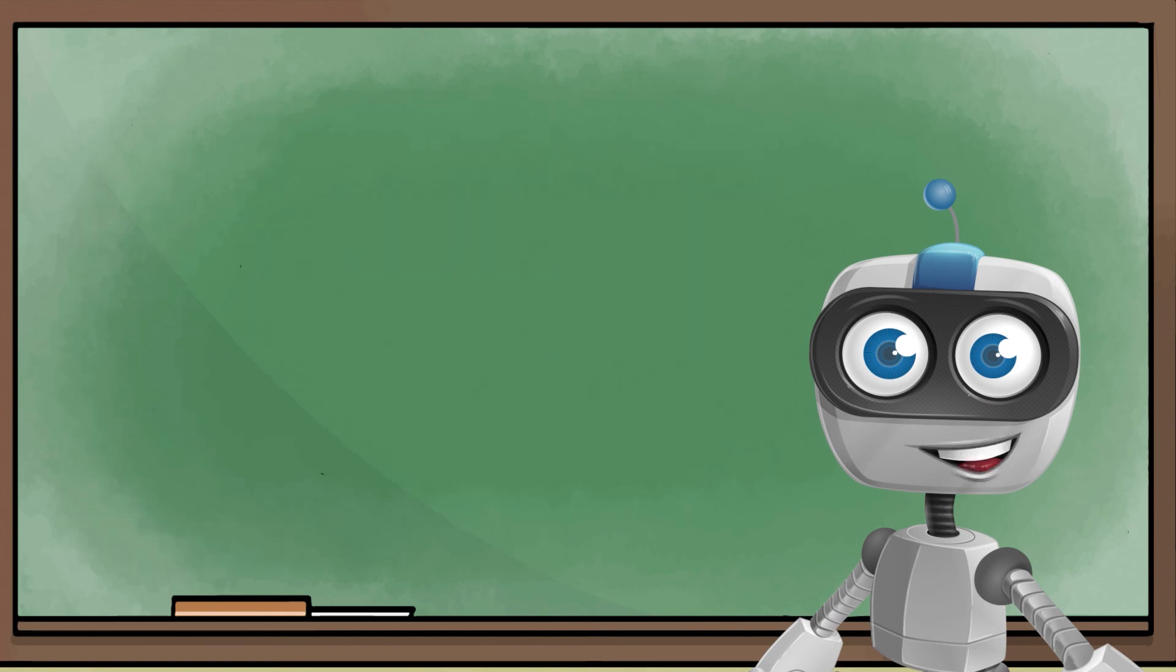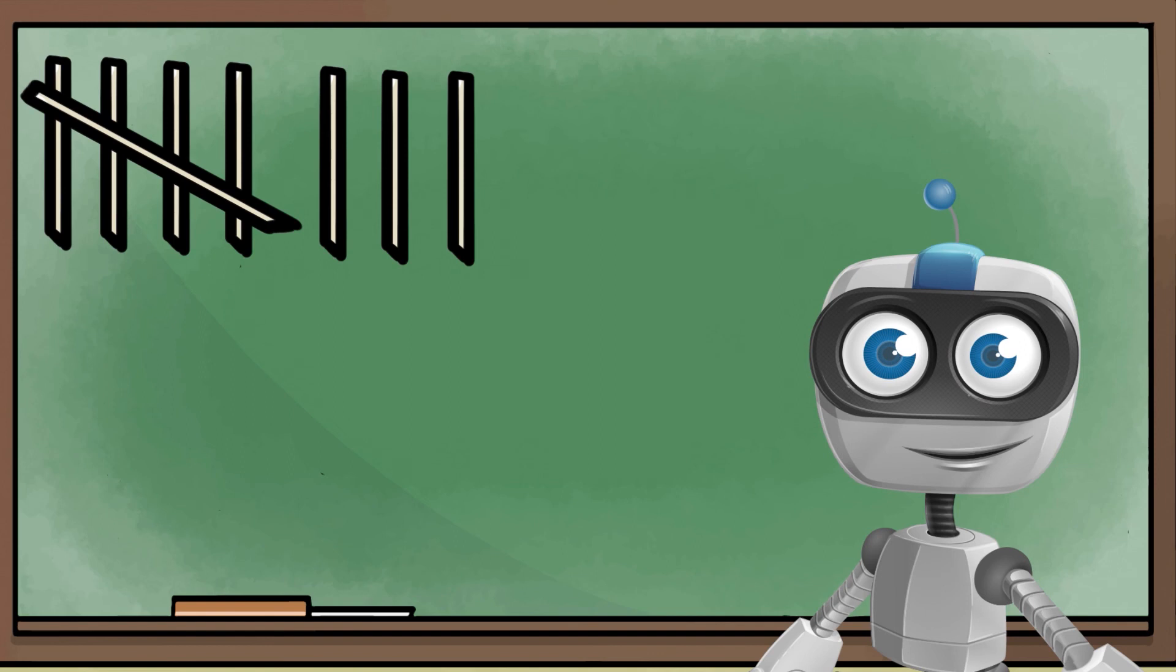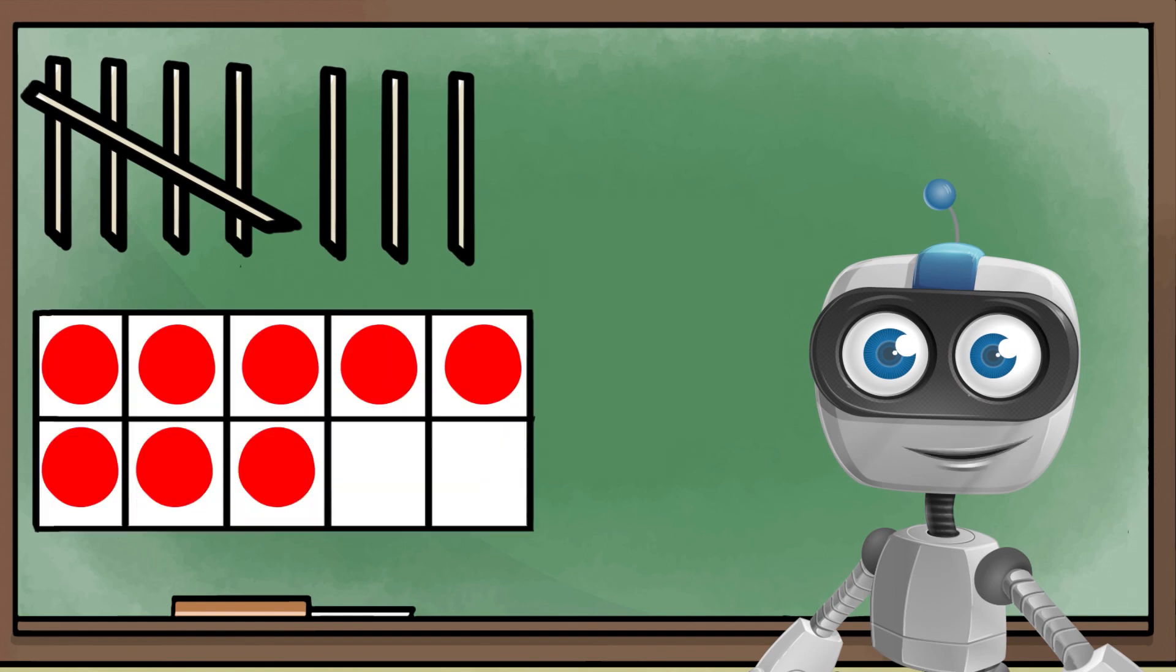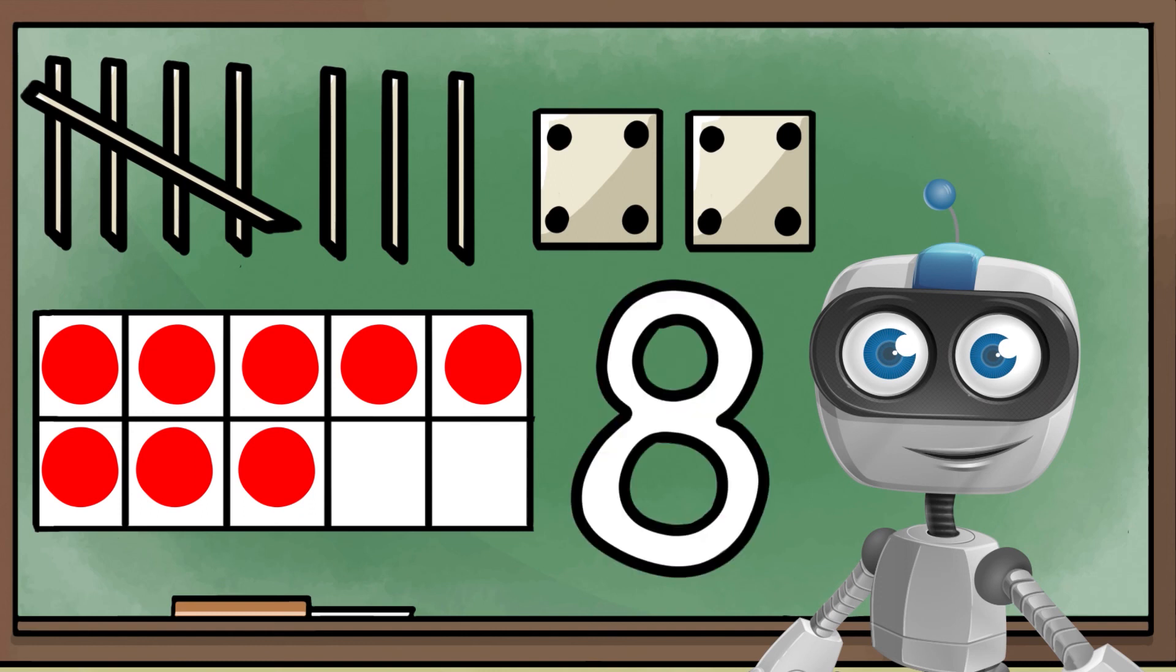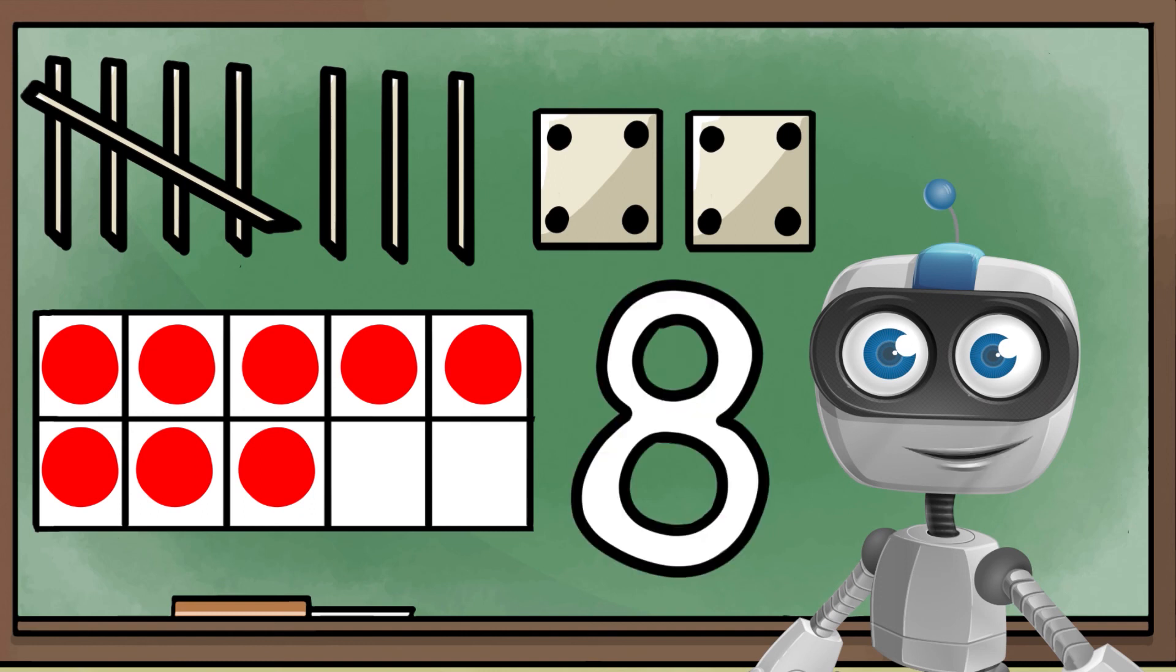One more example. What number am I showing you? Tallies, ten-frame, dice, numeral. Eight. Here are four different ways to show the number eight. These all have a quantity of eight. Quantity is a fancy way to say how many we have.